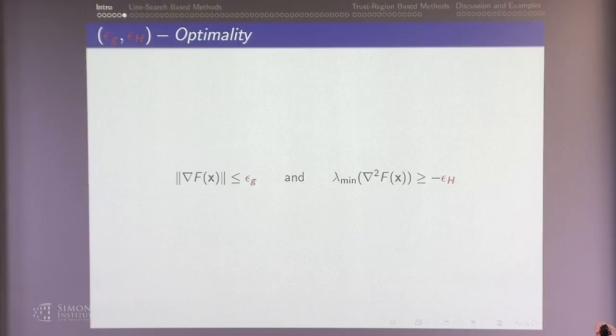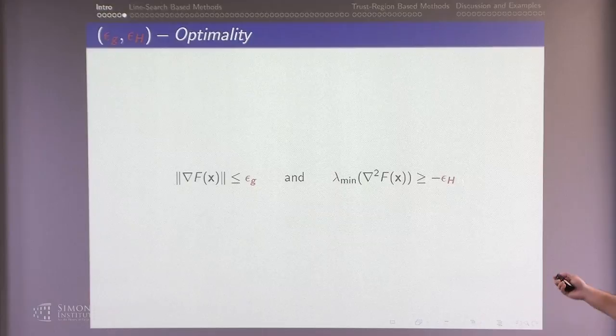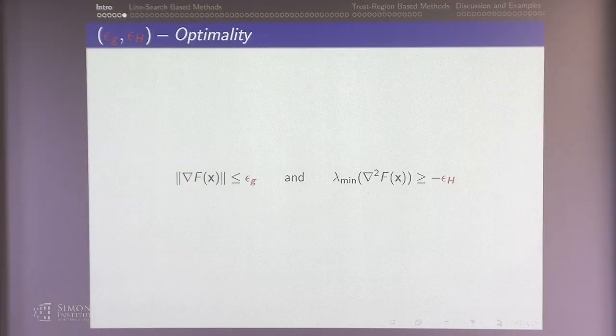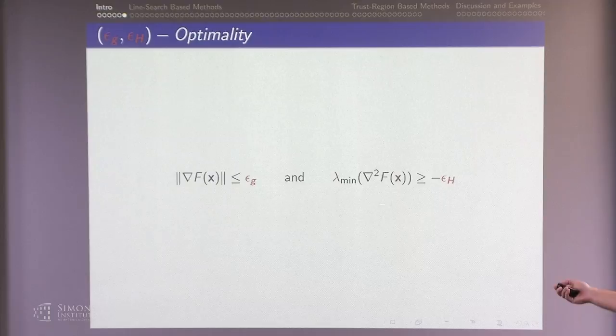Ideally, the algorithms you design in non-convex settings should satisfy these conditions. You prescribe your tolerance for epsilon_g and epsilon_h, and you want an algorithm that guarantees you end up at that point if you wait long enough. I divided the non-convex methods into two classes: line-search-based methods and trust region. These two are techniques to globalize optimization algorithms, because in non-convex settings you need different strategies to make your method converge from any point.